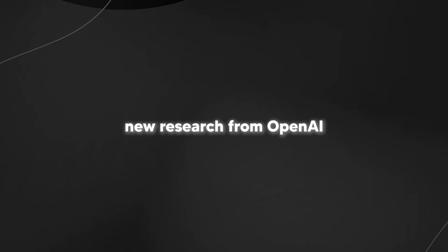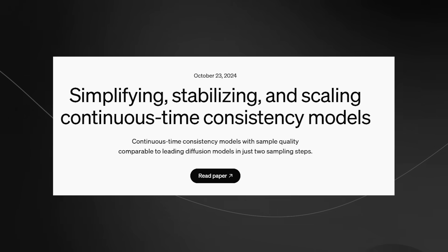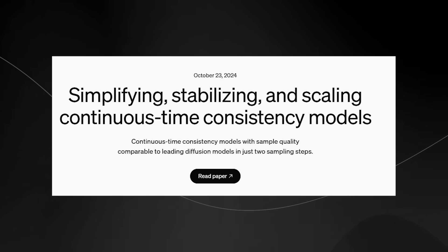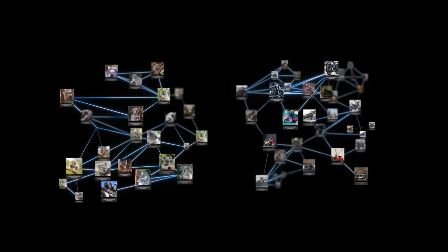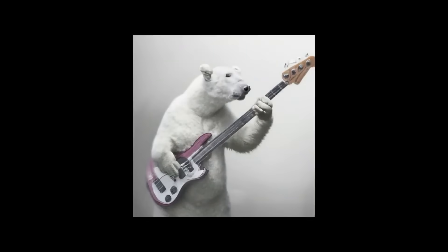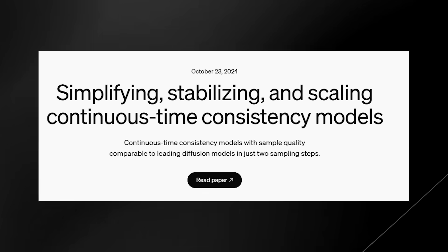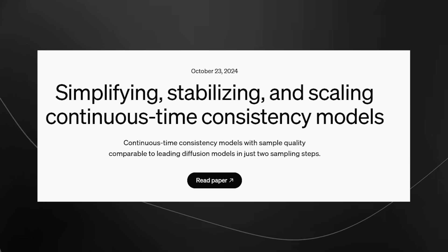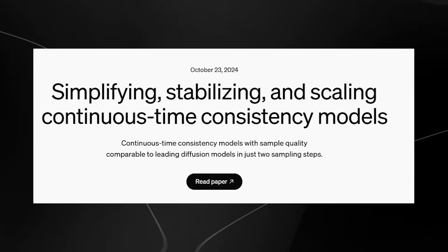We have new research from OpenAI called 'Simplifying, Stabilizing and Scaling Continuous Time Consistency Models.' AI image generation has made great strides, but the current mainstream methods — primarily diffusion models — tend to be slow. OpenAI has developed a new, more efficient and faster method called Simplified Continuous Time Consistency Models.